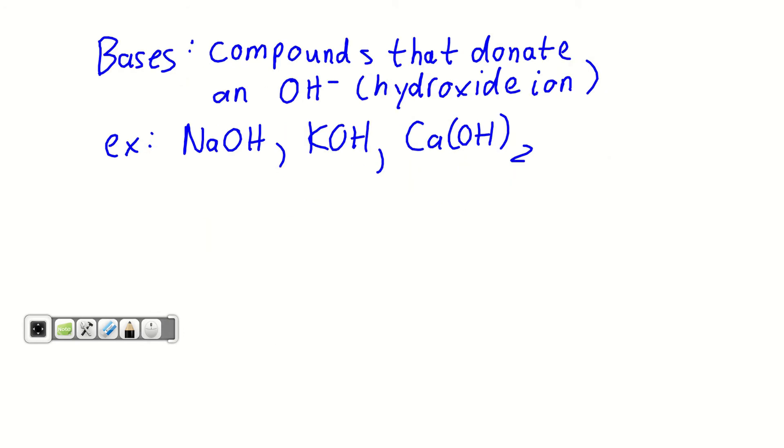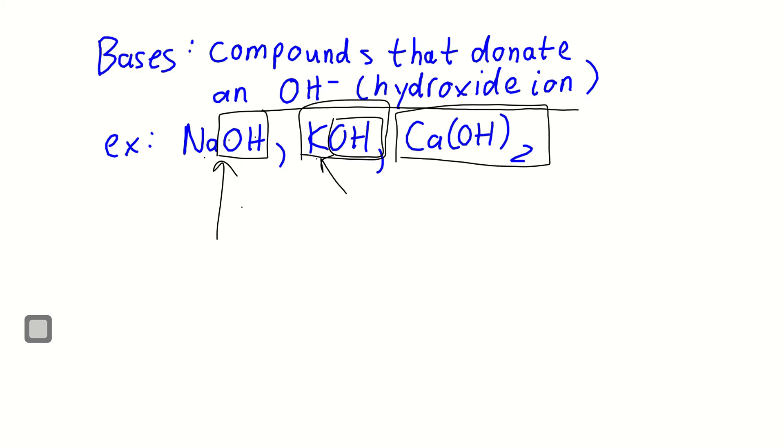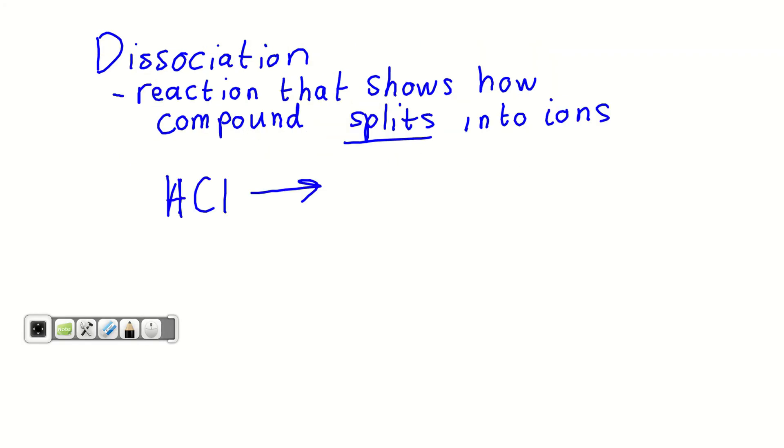So bases are compounds that donate this OH minus, which is called a hydroxide. This is something we should clearly see in a chemical, where if I look in a chemical and it has the OH together, it has to be written OH, and it's always written after some other element. So you can see this is sodium hydroxide. This one would be called potassium hydroxide. This would be called calcium hydroxide. All of these chemicals are bases in the end. If I dip litmus paper into any of these solutions, I would have a blue litmus paper afterwards.